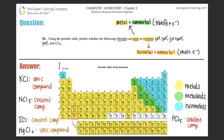Last but not least, CCl4. Chlorine is here on the periodic table. Carbon — element number 6 — is up top. Both are nonmetals, so CCl4 has to be a covalent compound.